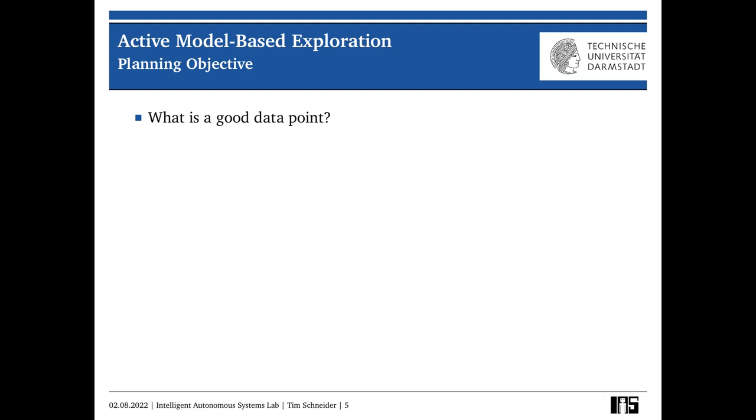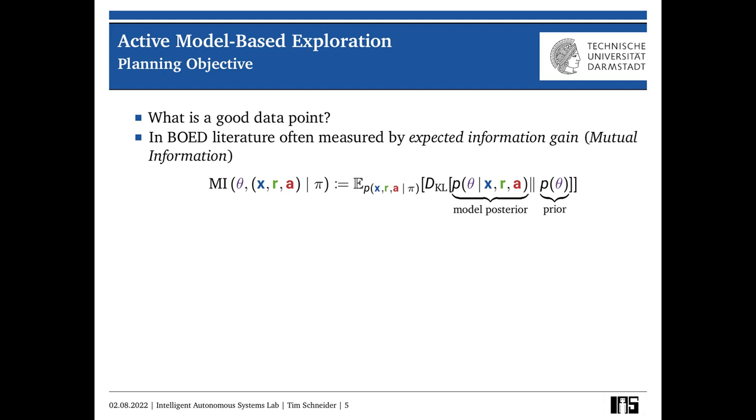But the question that we have to answer first is, what actually is a good data point? And so here we take inspiration from the optimal experiment design literature, where the quality of data points is usually measured by their expected information gain, or also called mutual information. And the way the expected information gain of a given policy pi is defined is as the expectation over future observations of the KL divergence between the model posterior, if we made those observations, and the model prior. Or to put it intuitively, we are computing how much we expect our belief in the correct model parameters to change if we follow policy pi.